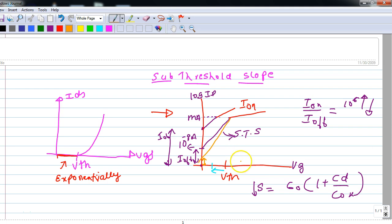So how do we reduce this sub-threshold slope? That is, we have to reduce this S. We can reduce this S by reducing the depletion capacitance or by increasing the gate capacitance. These are the two parameters where we can play with and get a very good sub-threshold slope.